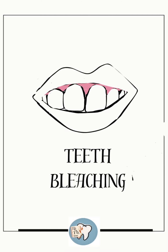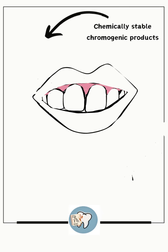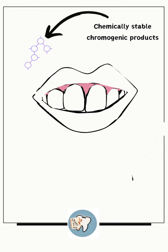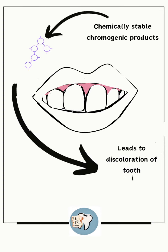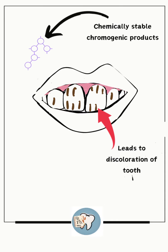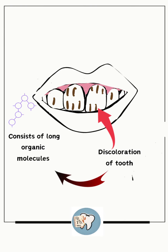Before moving towards bleaching of the teeth, we need to understand about the chemically stable chromogenic products, which are long-chained organic molecules that lead to the discoloration of the tooth. Here in this picture, we can see that the tooth is discolored due to these chemically stable chromogenic products, which consist of long-chained organic molecules.